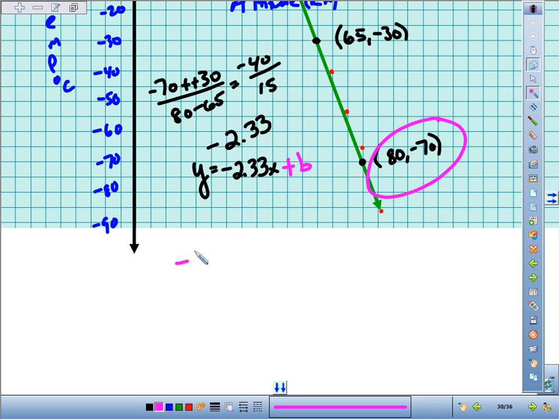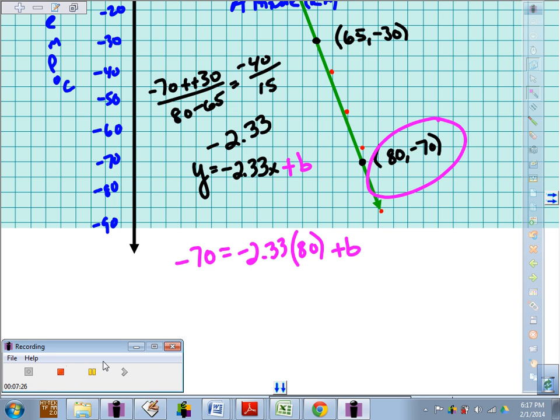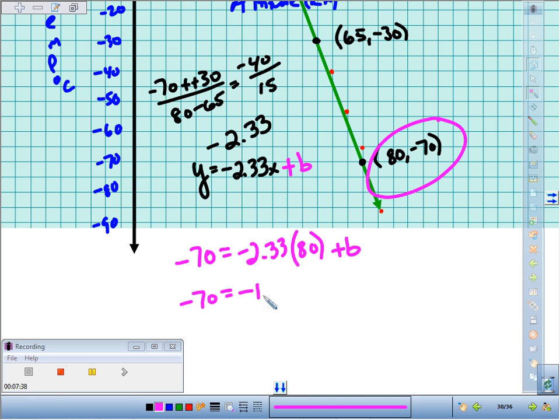Let's plug in negative 70 for y, let's plug in 80 for x and see what happens. So if we take negative 2.33 times 80, that ends up being negative 186.4. So we get negative 70 equals negative 186.4. See, they're not equal right now. That's why we have to factor in this y-intercept.